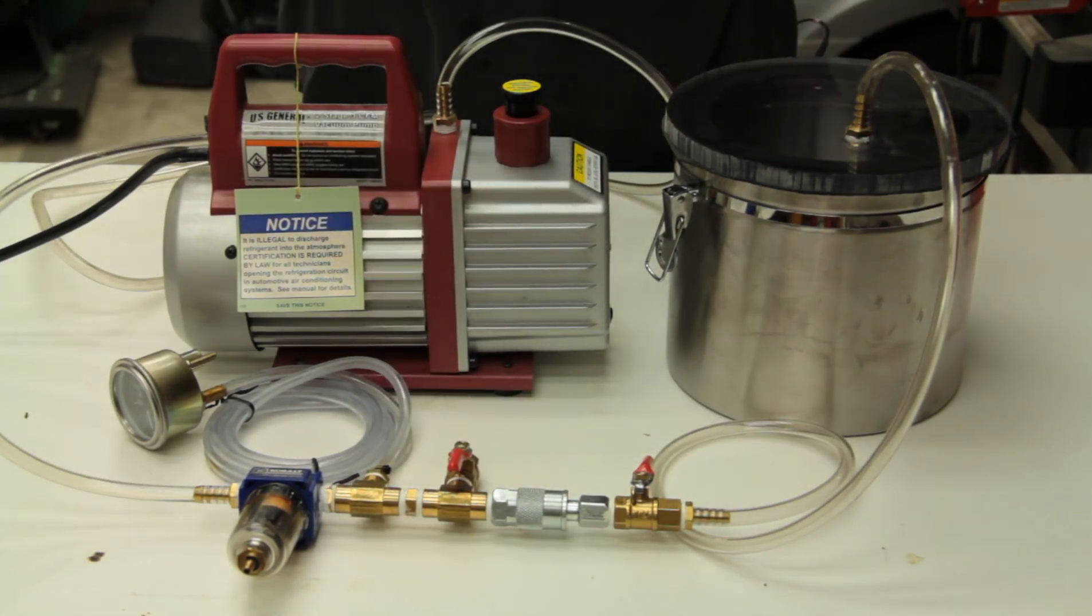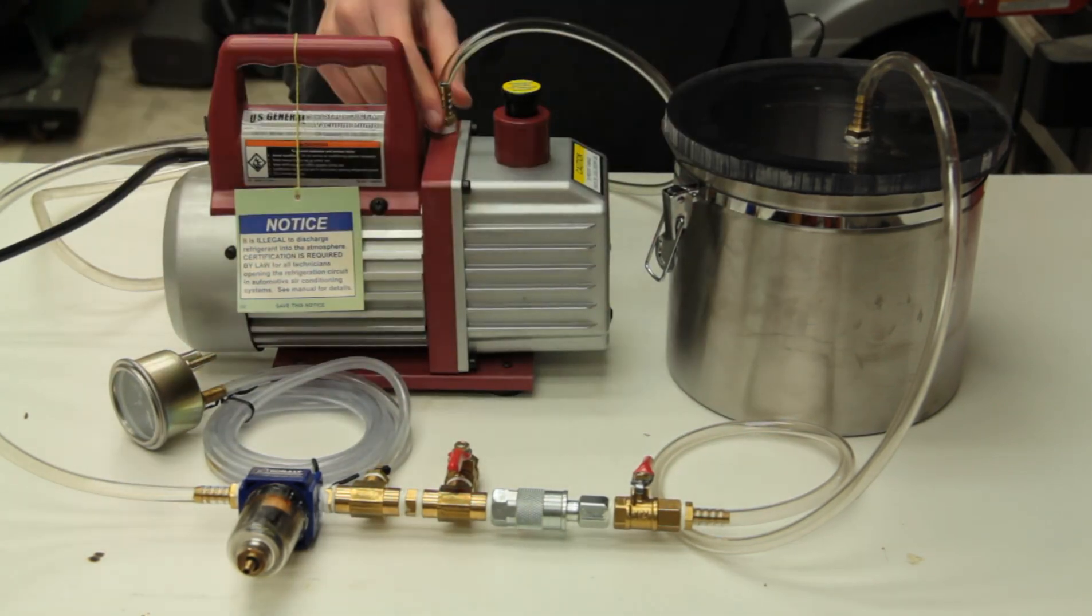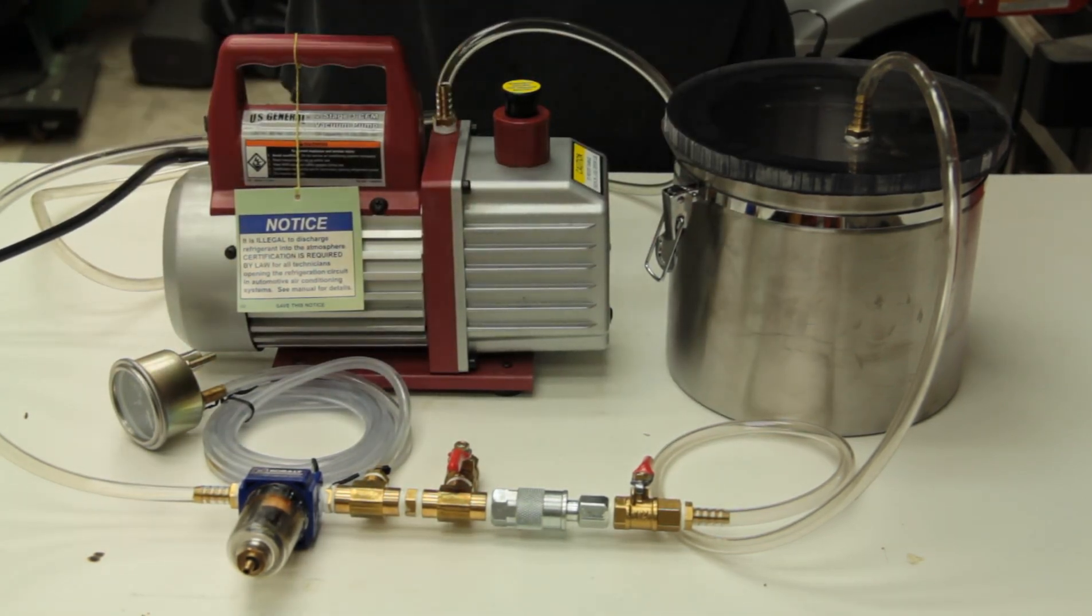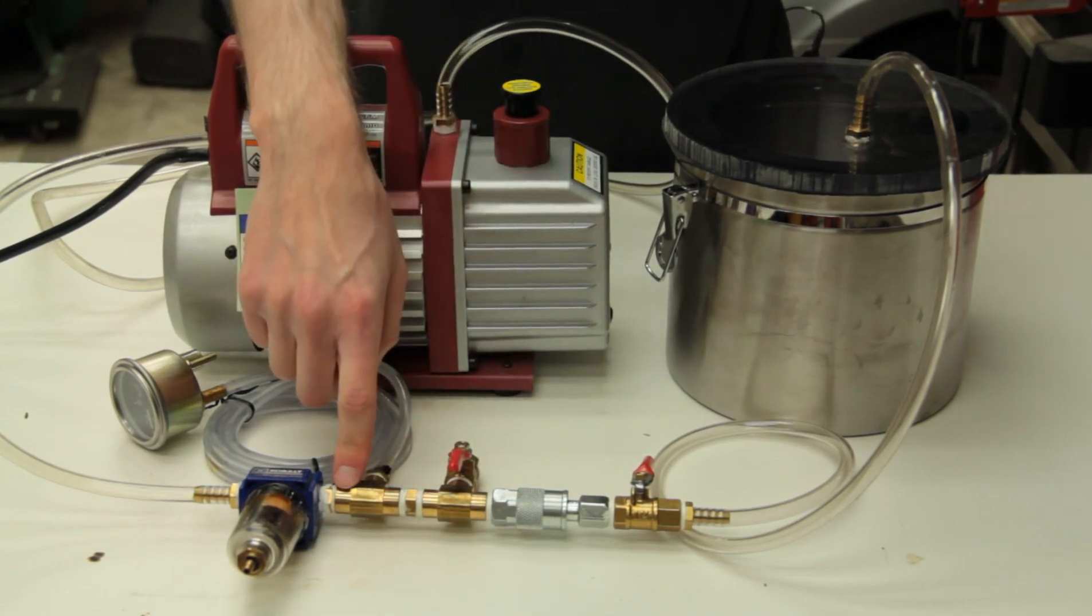But, once you've done so, you can take a hose barb fitting. And all these fittings are available at home supply stores like Home Depot or Lowe's. In both the air compressor section and the plumbing department, you'll find all of these.